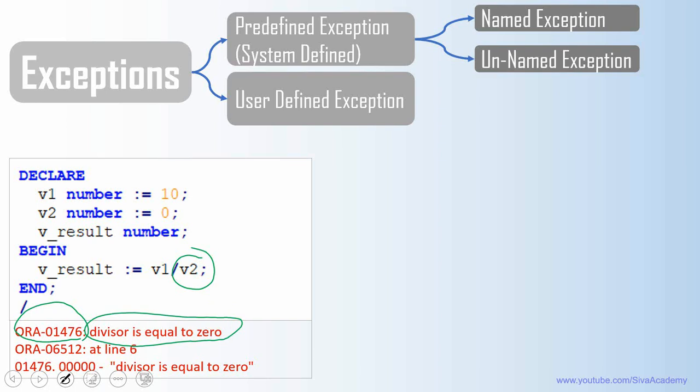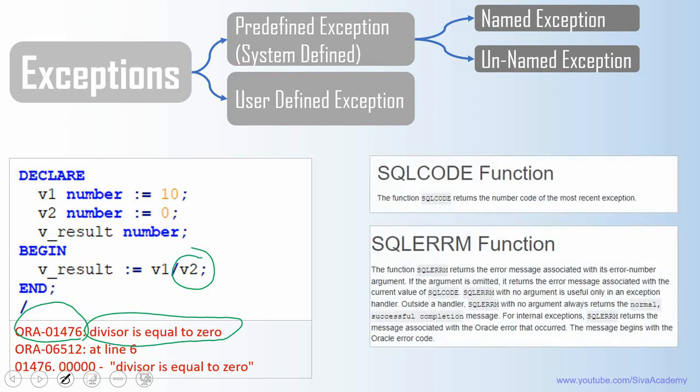In PL SQL, we have two functions. One is called SQLCODE and another is called SQLERRM. SQLCODE function will return the code of the most recent exception. Whereas SQLERRM function returns the description of the exception. SQLERRM function takes the error code as an optional parameter. If we pass the error code, it returns the description. Otherwise, it just returns the last most recent exception.